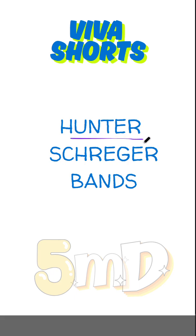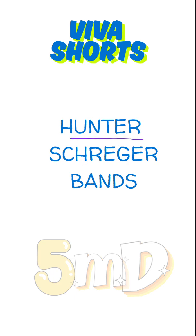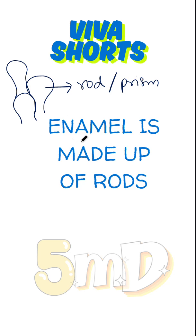By the end of this video, you will understand about Hunter-Schreger Bands. Enamel is made up of rods, which are also known as prisms. Rods are the basic structural unit of enamel.